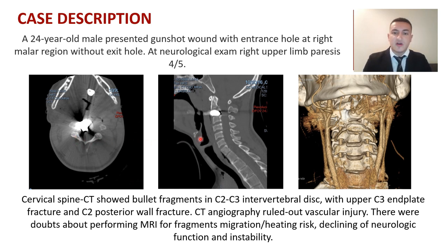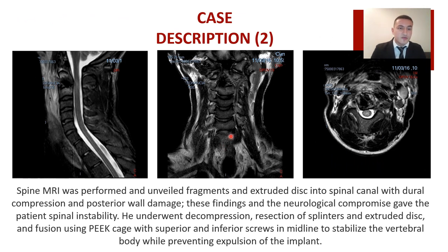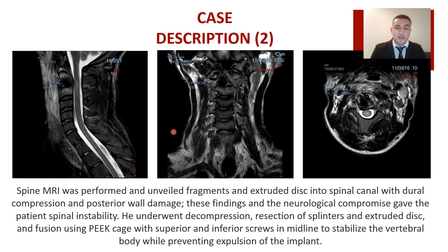We also performed a CT angiography which ruled out vascular injury. We had doubts about performing an MRI, mainly because of the risk of fragment migration or heating, and we didn't want to contribute to a decline in neurological function or spinal instability. We finally decided to perform the MRI, and this exam unveiled fragments and extruded disc into the spinal canal directed to the right side, consistent with the paresis of the right upper limb. Compression and posterior wall damage were also present, giving the patient an instability condition.